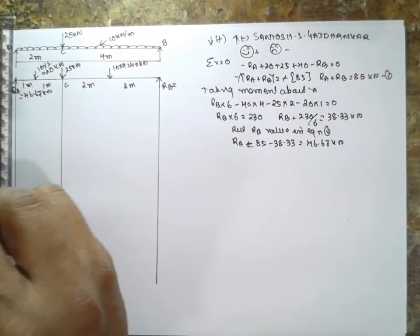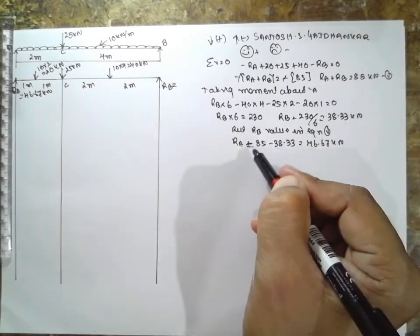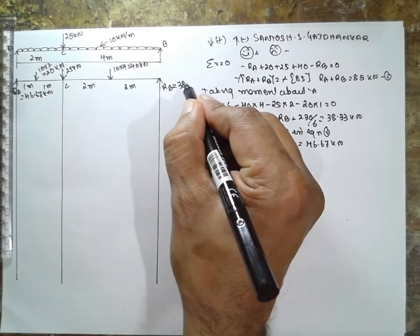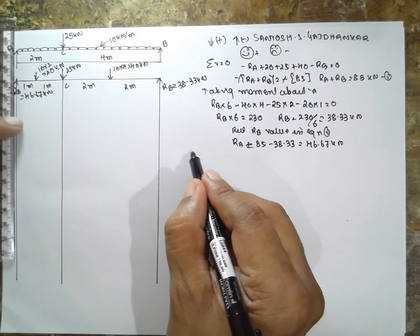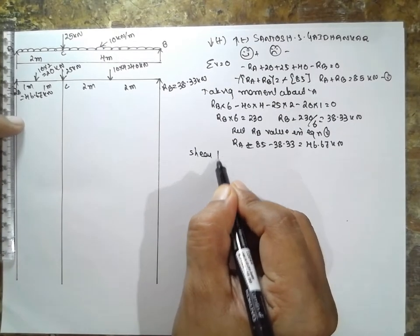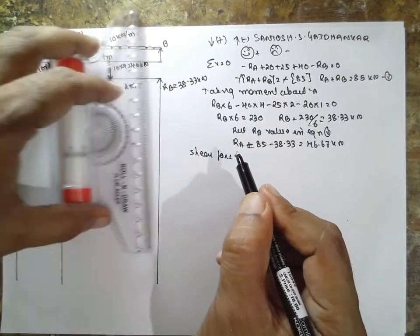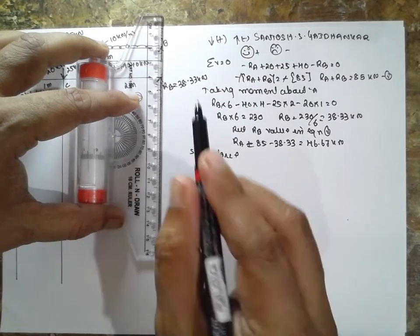RB is 38.33 kilonewton. Now shear force, there is a load acting here. First I will consider the right side, there is no load.